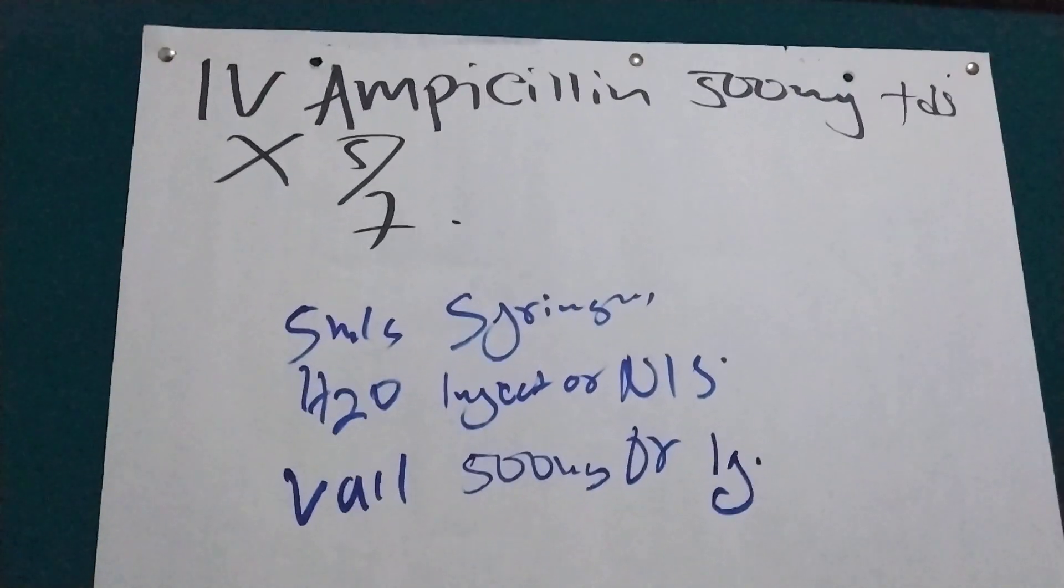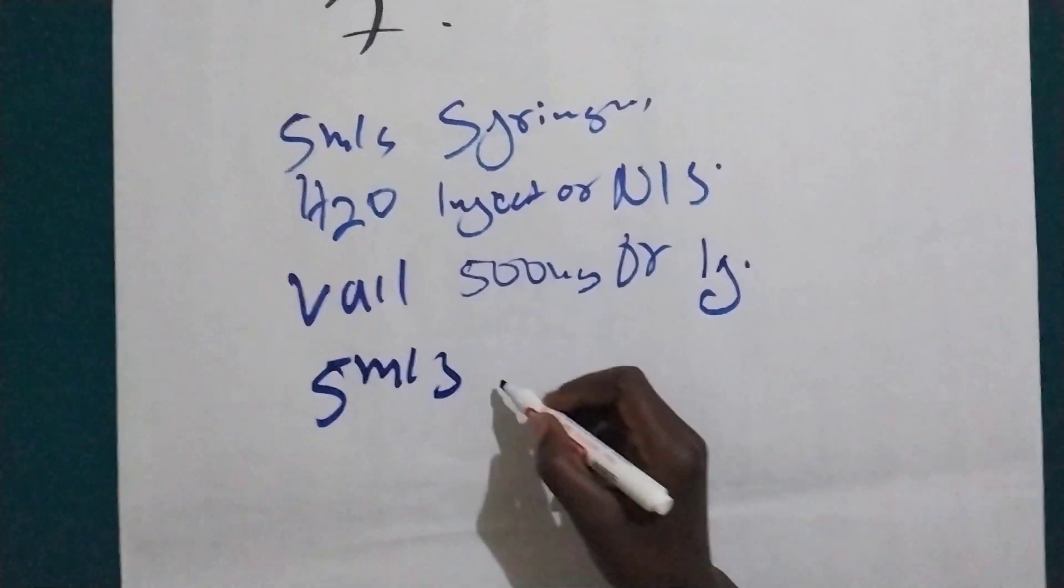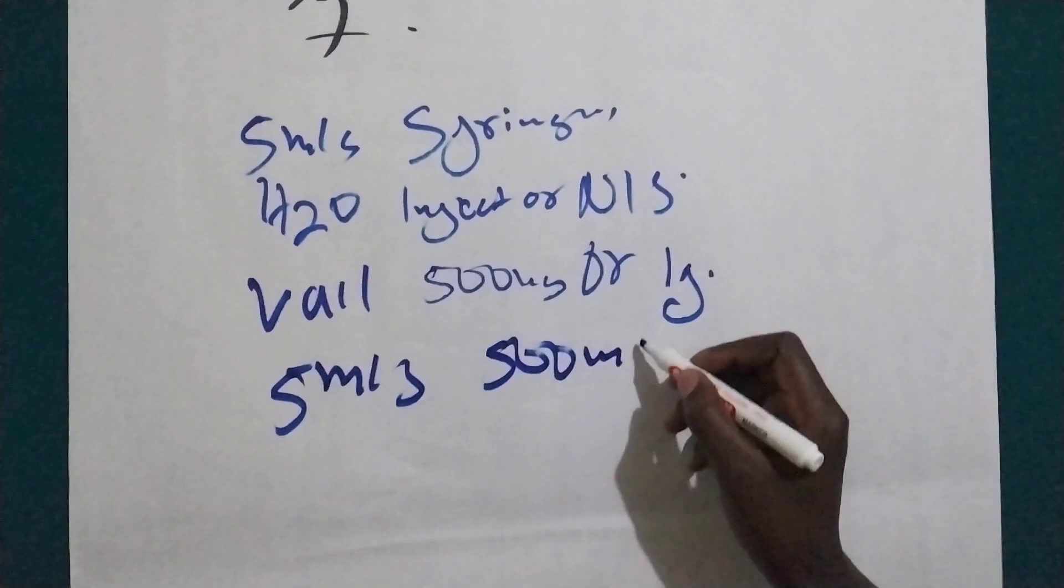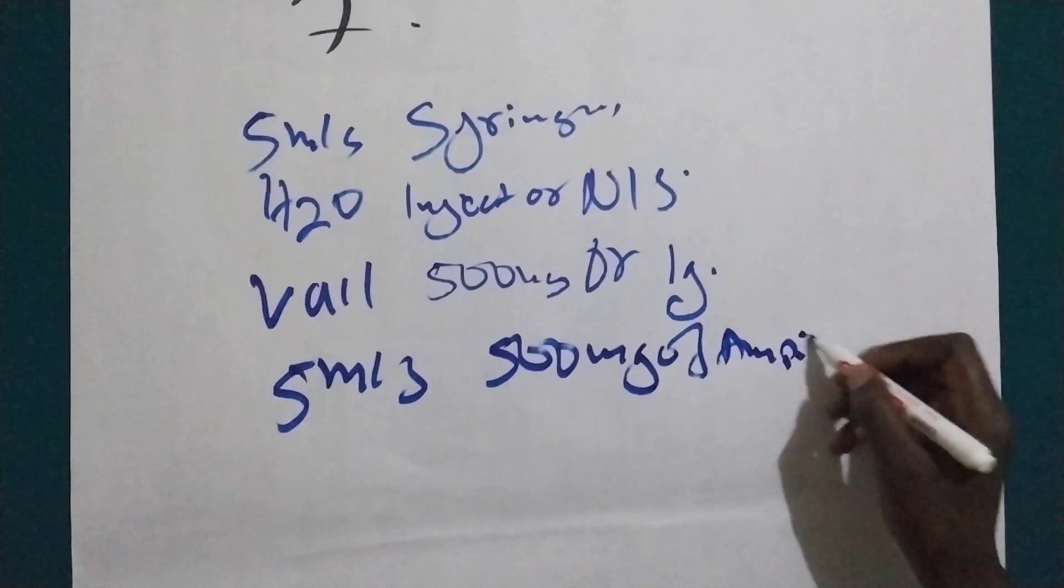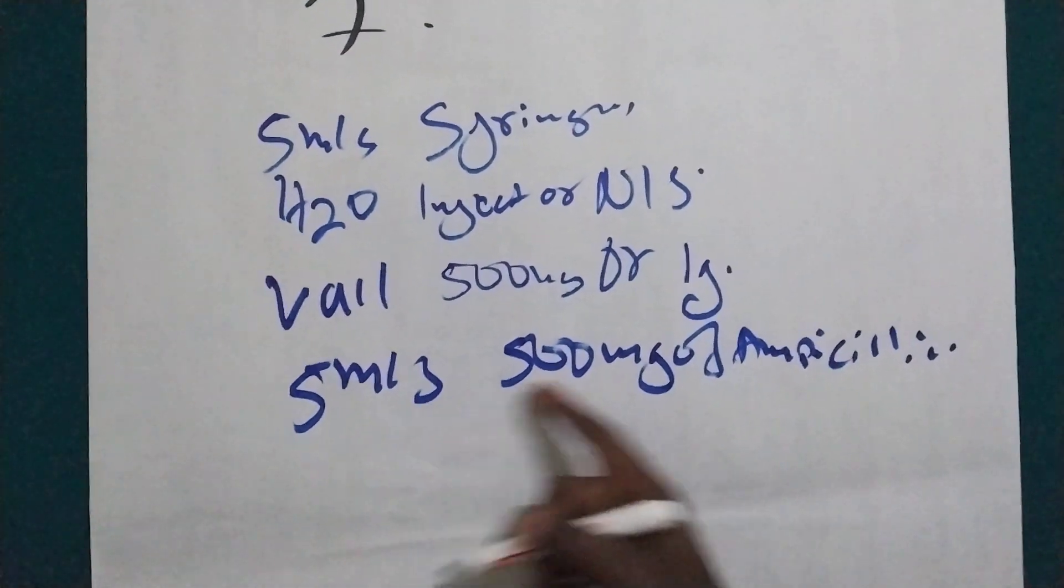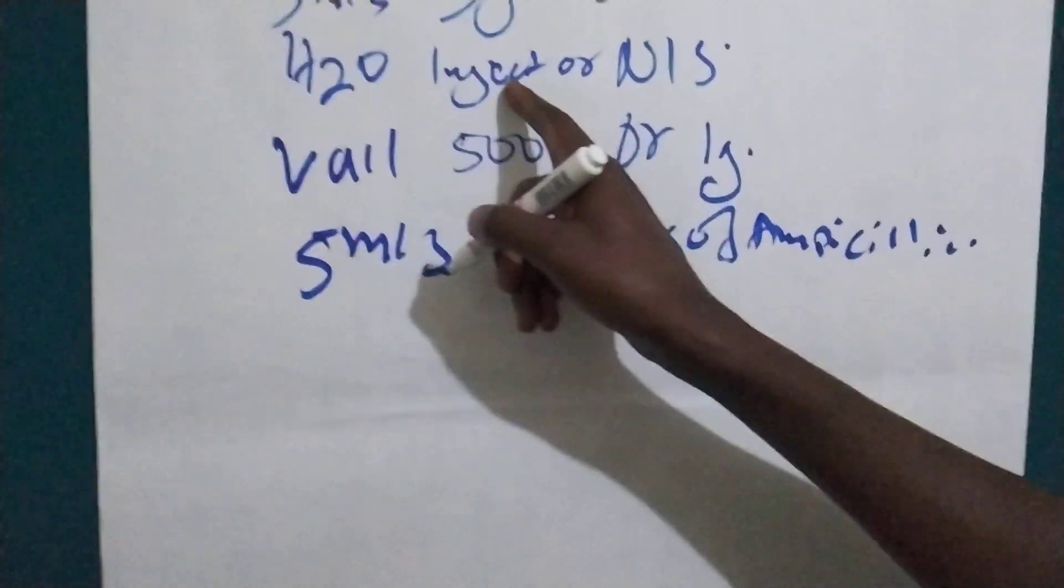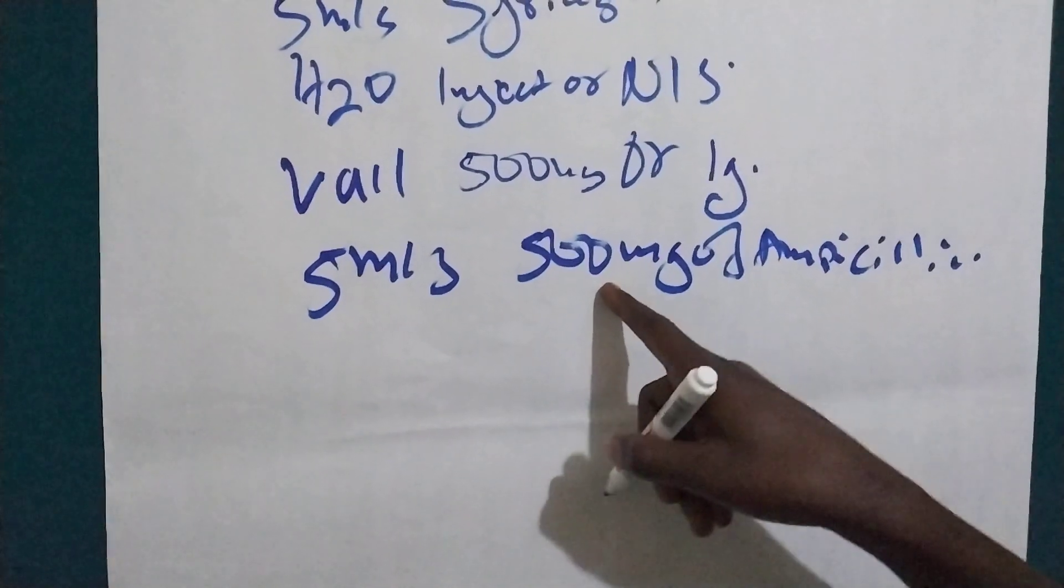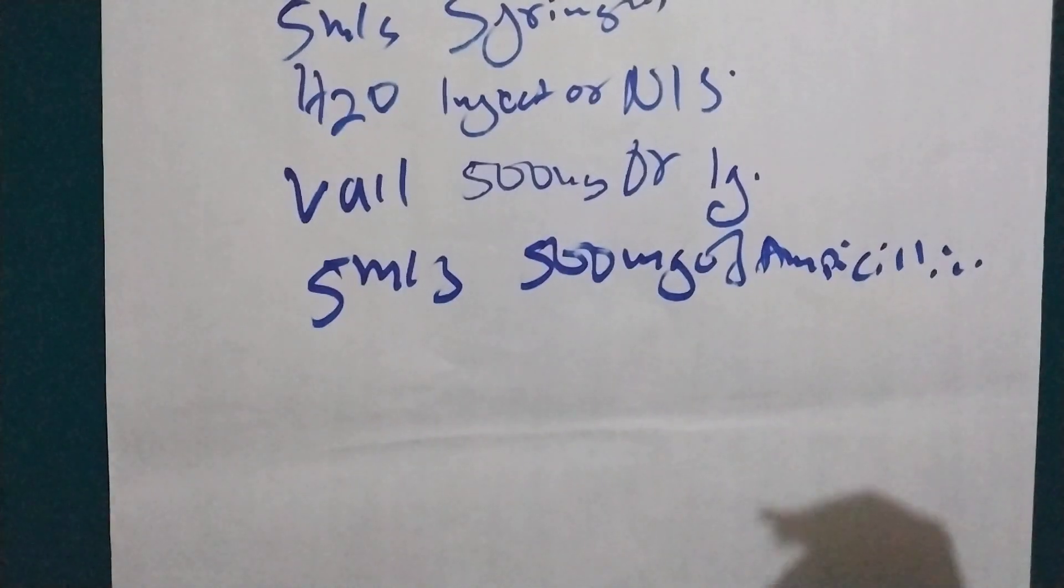So what we are going to do, we are going to use five mils to dilute the 500 milligram of ampicillin. So now if you dilute with five mils, you are going to aspirate five mils of water for injection and you put in the vial containing 500 milligram of ampicillin.